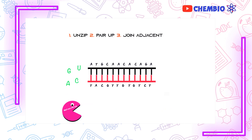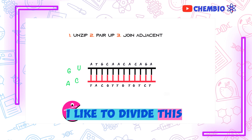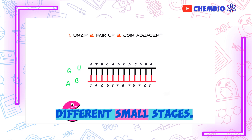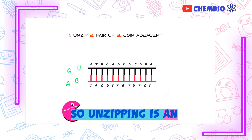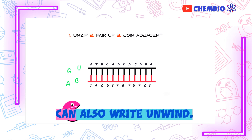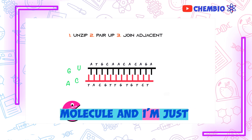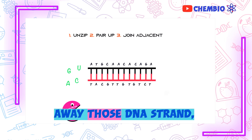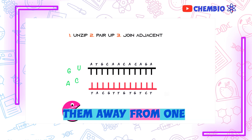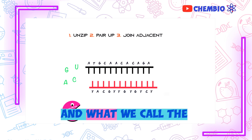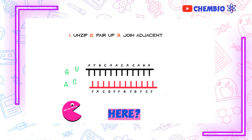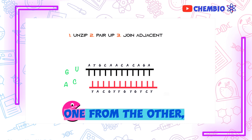Now that we have a good background about the process of transcription, we're going to go into detail. I like to divide this process into three different small stages. The very first stage is known as unzipping or unwinding — both are actual scientific terms you can write in the exam. It means we take that DNA molecule and unzip it — pull those two DNA strands away from one another. We have what we call the sense strand and the antisense strand, and we're going to break those strands apart from each other.